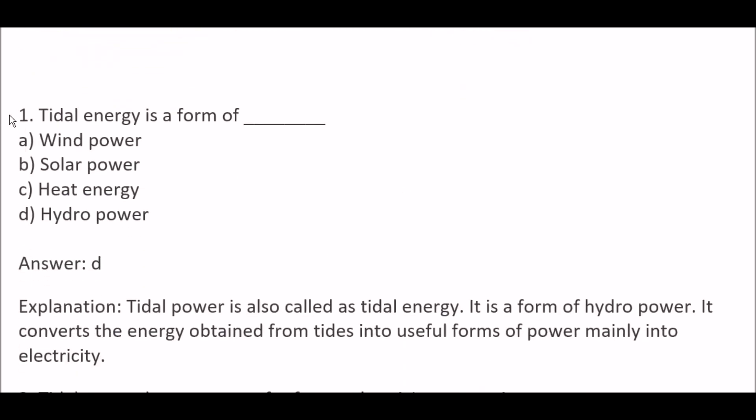First question: Tidal energy is a form of — Option A, wind power; Option B, solar power; Option C, heat energy; Option D, hydropower. Right answer is Option D, hydropower. Because tidal power, also called tidal energy, is a form of hydropower. It converts the energy obtained from tides into useful forms of power, mainly electricity.